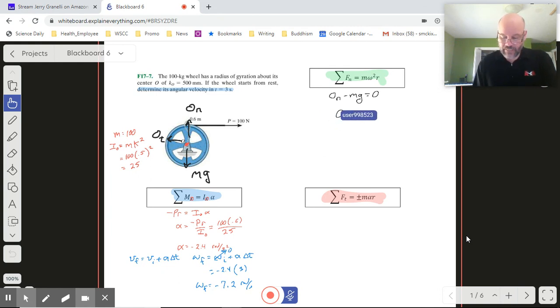But the axle has to do some other stuff too. Notice P is 100 and it's off to the right. We're going to have to have some leftward force to balance that out, and that's what O_t is going to do for us. Let's take a look at that in our tangential force summation equation.